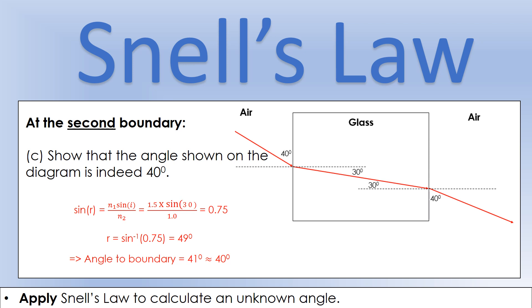We do the inverse sine of 0.75, and that tells us the angle of refraction is 49 degrees, which means the angle to the boundary would be 41 degrees, 90 minus 49, which is approximately 40 degrees. We rounded the 1.5, so we shouldn't expect to get exactly 40 degrees.